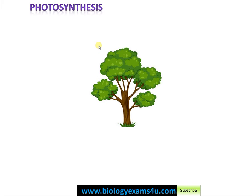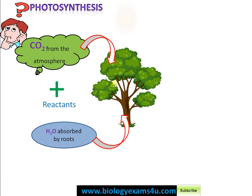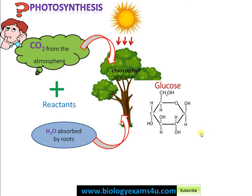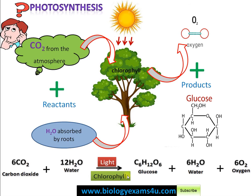Photosynthesis is an amazing process where the reactants are water, absorbed by the roots and translocated to the leaf, and carbon dioxide from the atmosphere. Sunlight is the source of energy, trapped by the chlorophyll of the leaf and converted to glucose, while oxygen is released as a byproduct. The equation: carbon dioxide combines with water in the presence of sunlight and chlorophyll to form glucose, and oxygen is evolved as a byproduct.